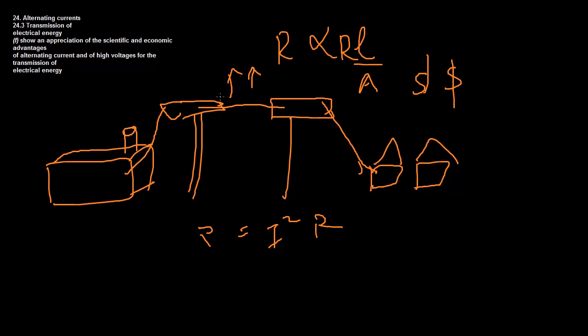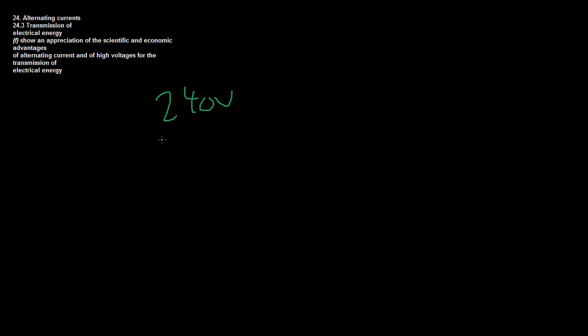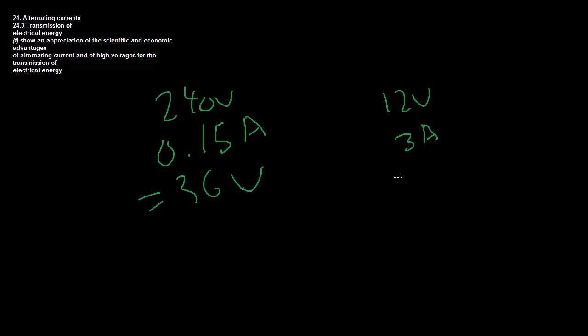There's actually a very interesting way to resolve this, and that is by using high voltage transmission lines. It's easiest to illustrate this through an example. Pretend we have a 240-volt power supply with a current of 0.15 amperes, and over here we have a 12-volt power supply with 3 amperes. You have to realize that 240 times 0.15 equals 36 watts, and 12 times 3 also equals 36 watts. These are actually the same power — just in different forms.